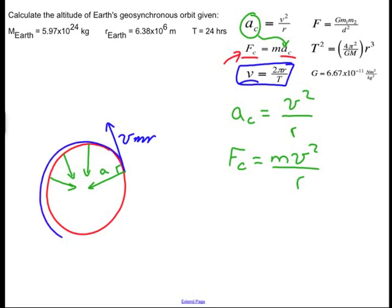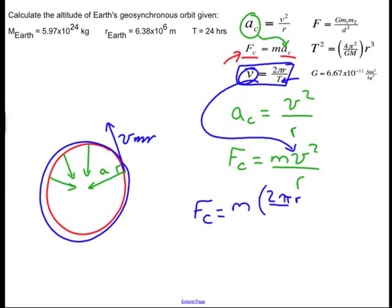The distance is 2 pi r, that's the circumference of a circle, divided by a very particular and special time. It is the period. So by definition, the period is the amount of time to go around a circle once. So take this v that's right here and plug it in to that v. And you find an expression that looks like this. The centripetal force is mass times 2 pi r over t. All of that quantity is getting squared, divided by r.